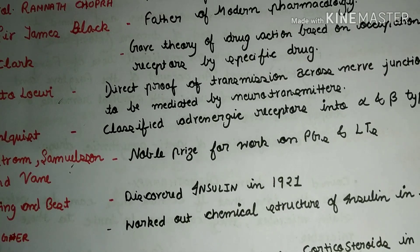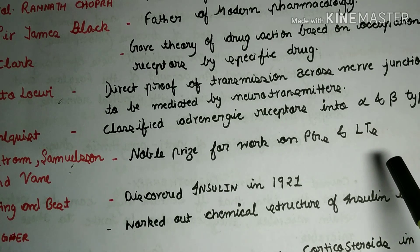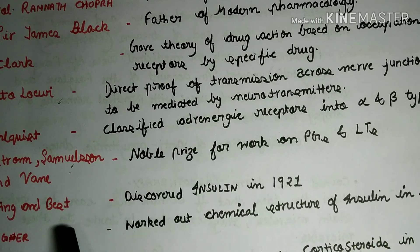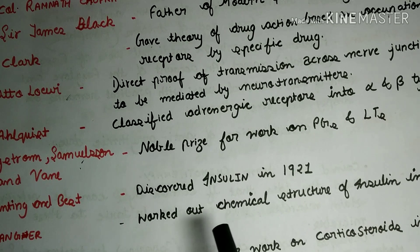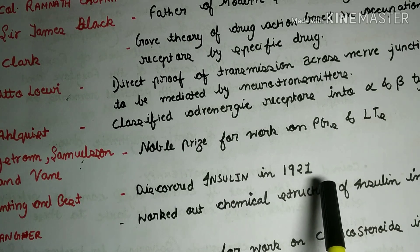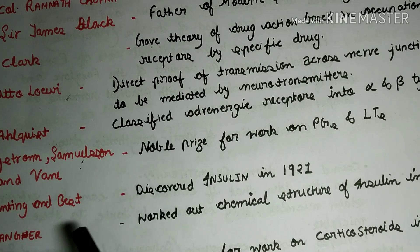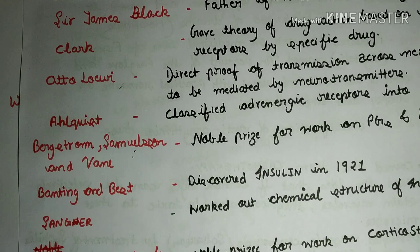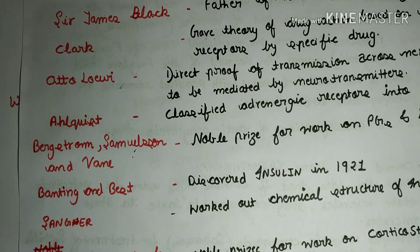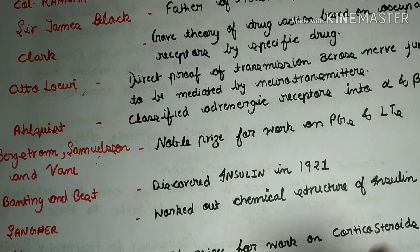Bergstrom, Samuelsson, and Vane won the Nobel Prize for their work on prostaglandins and leukotrienes. Another very important discovery was the discovery of insulin in 1921, by Banting and Best. Sanger worked out the chemical structure of insulin in 1956.